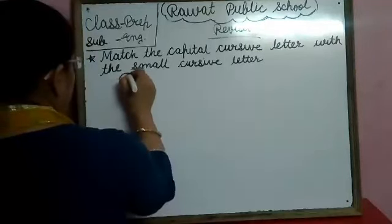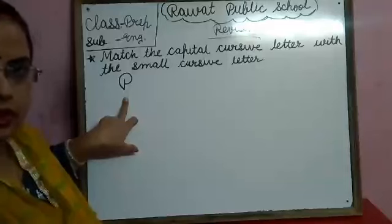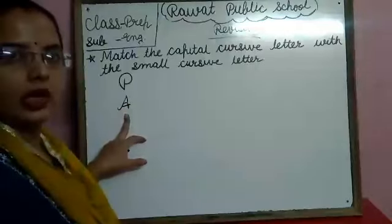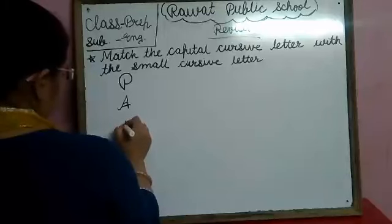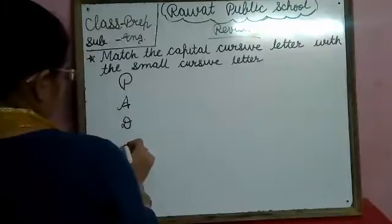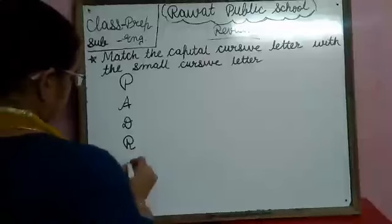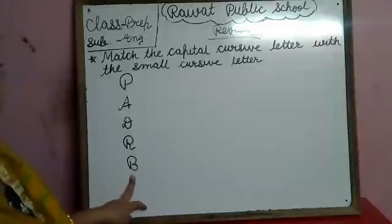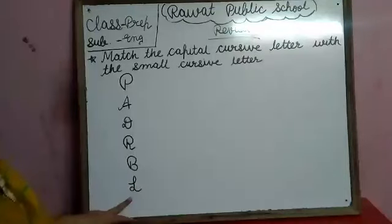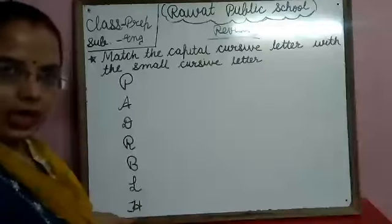This is — which letter is this? Capital cursive P. And this is capital cursive A. This is capital cursive D. This is capital cursive B. And this is capital cursive L. This is capital cursive H.